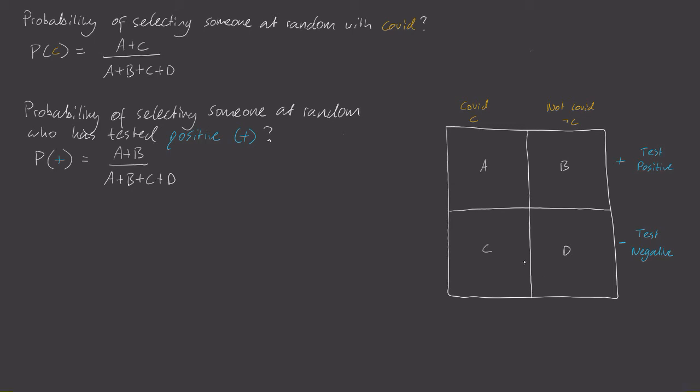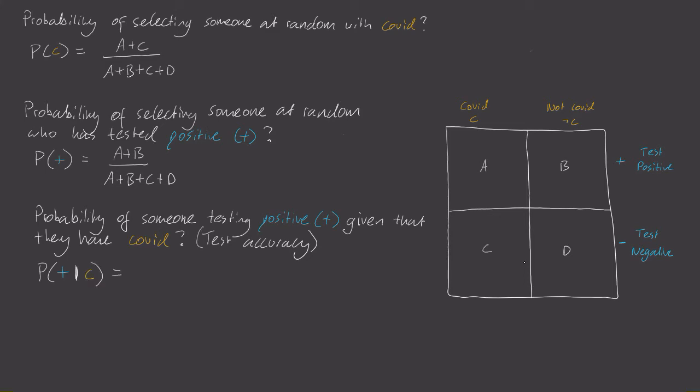Now here's the hard question. What's the probability of someone testing positive given that they have COVID? And if you think about it, this is actually the definition of test accuracy. So what is the probability of testing positive given that you have COVID? Well, unlike before, we have additional information. This randomly selected person came from the group that has COVID. This limits our probability space, so we only care about these two quadrants.